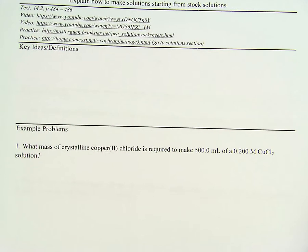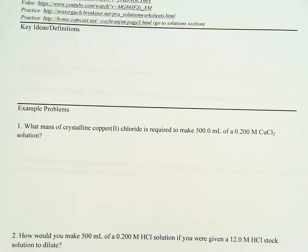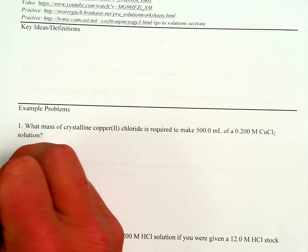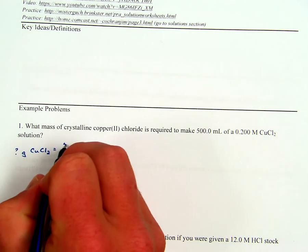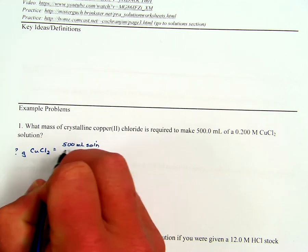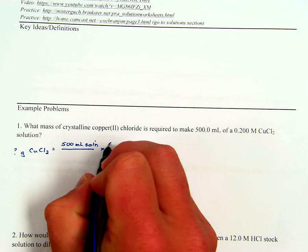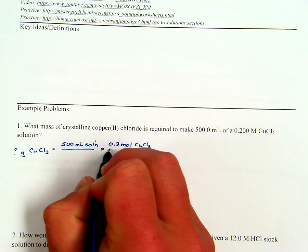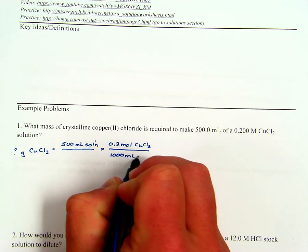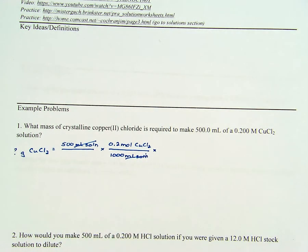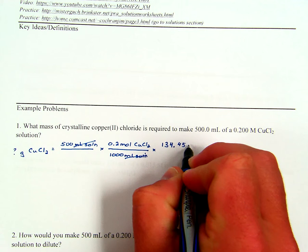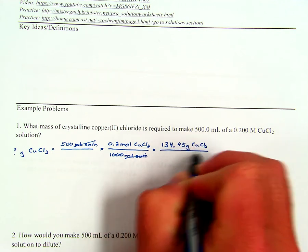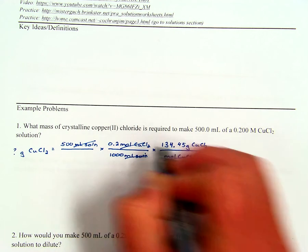Taking a look at the first example problem, we're asked a question we've already dealt with in our previous lesson: what mass of crystalline copper chloride is required to make 500 milliliters of a 0.2 molar CuCl₂ solution? We're looking for the mass of CuCl₂ — we're making 500 milliliters at 0.2 moles per 1000 milliliters. Using the molar mass of copper(II) chloride, 134.45, as a conversion factor, our units cancel to give us grams.